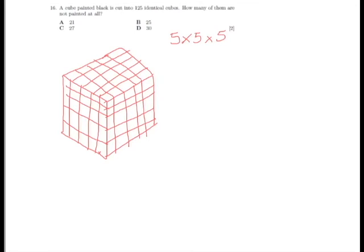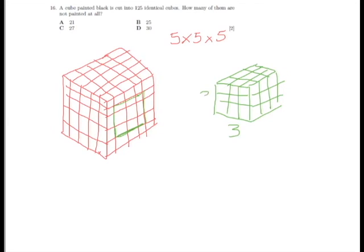So that would give us a smaller cube, which is a size of 3 by 3 by 3. And 3 times 3 times 3 is 3 cubed, which equals 27. So there must be 27 unshaded cubes. Answer C.